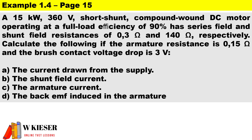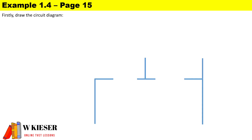Example 1.4: A 15 kilowatt, 360 volt short shunt compound wound DC motor operating at full load efficiency of 90% has series field and shunt field resistances of 0.3 ohms and 140 ohms respectively. The armature resistance is 0.15 ohms and the brush contact voltage is 3 volts. It is a short shunt, so the series winding is connected in series with the armature, and the shunt winding is connected in parallel to the armature.